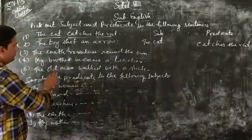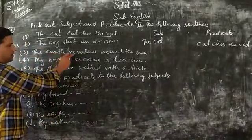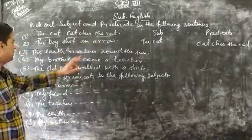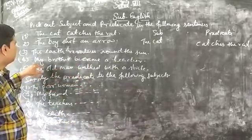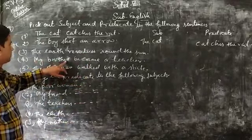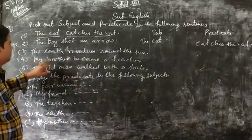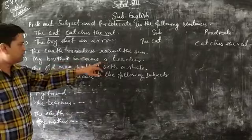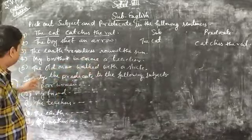The earth will be the subject, and the remaining part will be the predicate. The migrator is a two-word subject, and become a teacher will be the predicate.